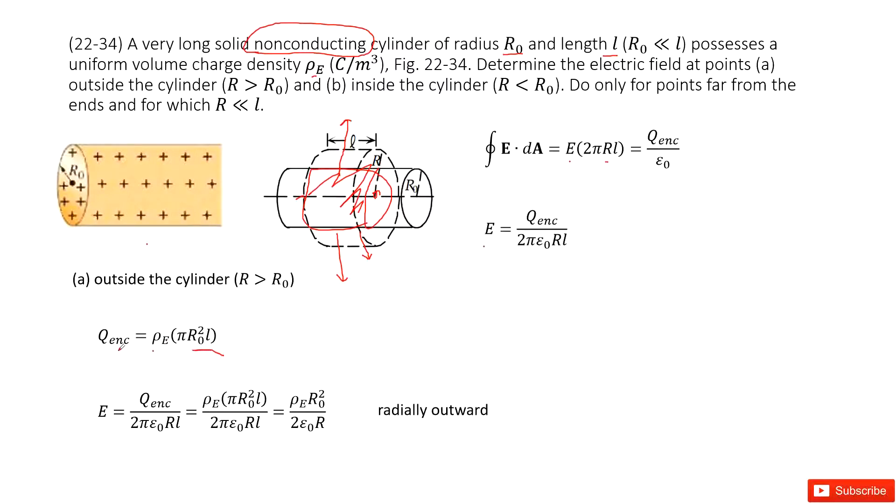Now, we include the Q enclosed in this function. We can get the function look like this one. In this function, you can see π, π can be cancelled. L, L cancelled. So we get the final answer look like this one, radially out.